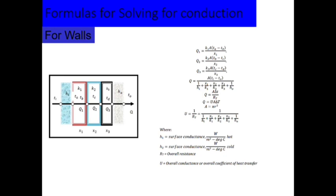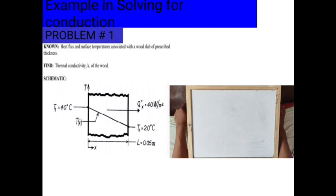For walls, Q1 is equivalent to K, the thermal conductivity, times the area, then multiplied by temperature A minus temperature B over the thickness of the material. These other formulas are just the derivation of the main formula.